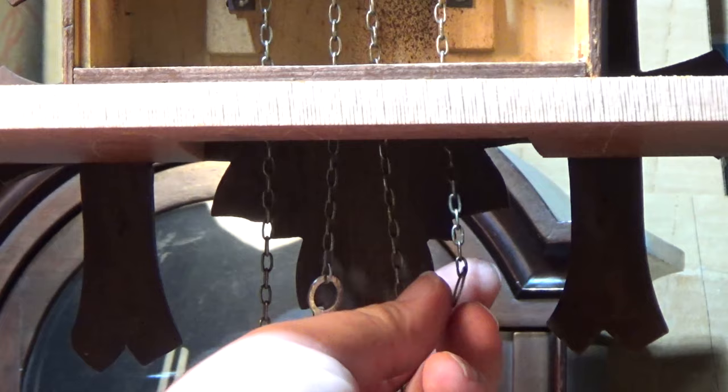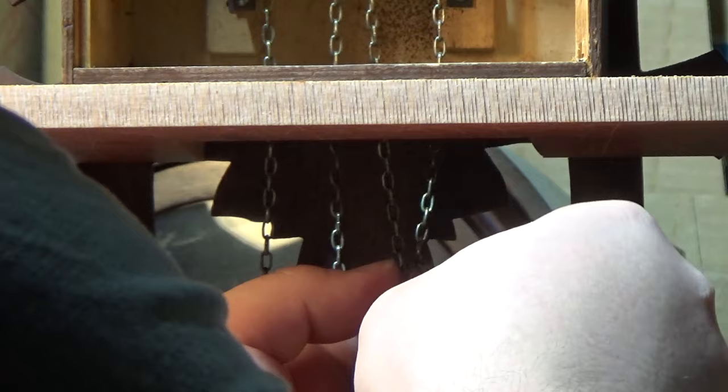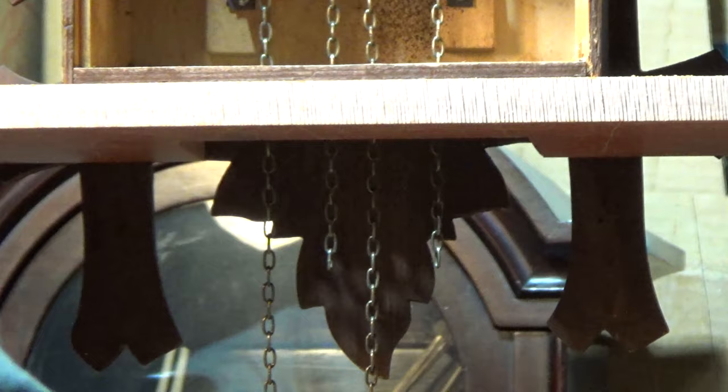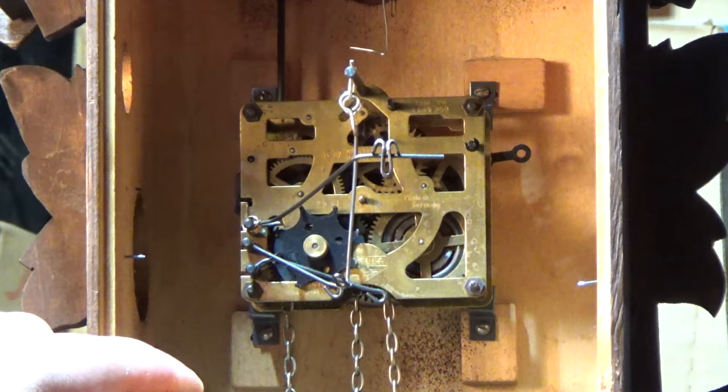Next, we have to take off the hooks and loops from the chains so we can remove the chain from the movement. This is easily done by opening up the last link in the chain and removing both the chain and the hook or the loop. Then we can just pull the chain through the movement until it drops out.